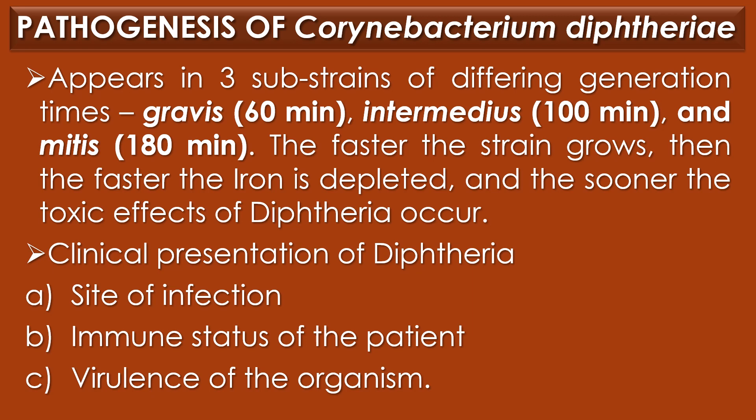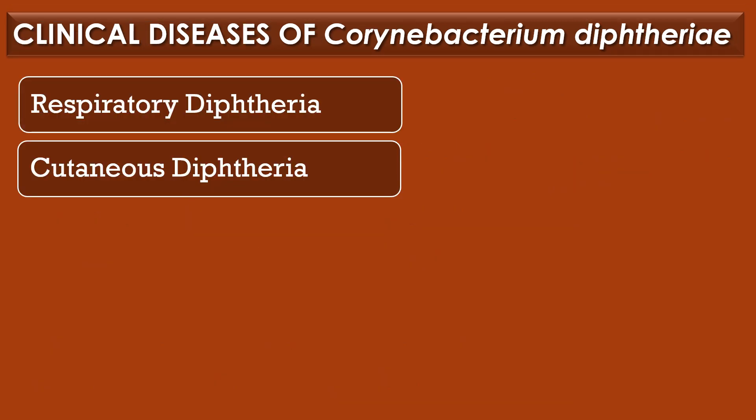Corynebacterium diphtheriae appears in three substrains with different generation times. For example, gravis is 60 minutes, intermedius is 100 minutes, and mitis is 180 minutes. The faster the strain grows, the faster iron is depleted and the sooner the toxic effects of diphtheria occur. The clinical presentation of diphtheria is determined by site of infection, immune status of the patient, and virulence of the organism.